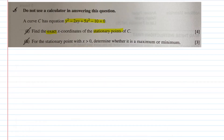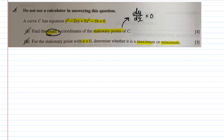Right off the bat, whenever they ask you to find stationary points, you should know that dy/dx must equal 0 — so write that down first. When they say 'exact,' it means no decimal places; the answer must be a fraction or whole number. The second part asks you, for the stationary point where x > 0, to determine whether it is a maximum or minimum — so there will indeed be two stationary points.